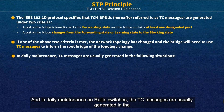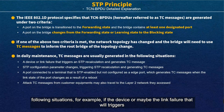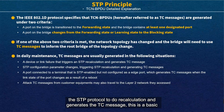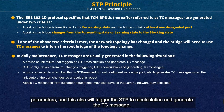In daily maintenance, TC messages are usually generated in the following situations. The first is a device or link failure, which triggers STP to recalculate and generate a TC message. The second is when you change configuration parameters, which also triggers STP recalculation and generates a TC message.